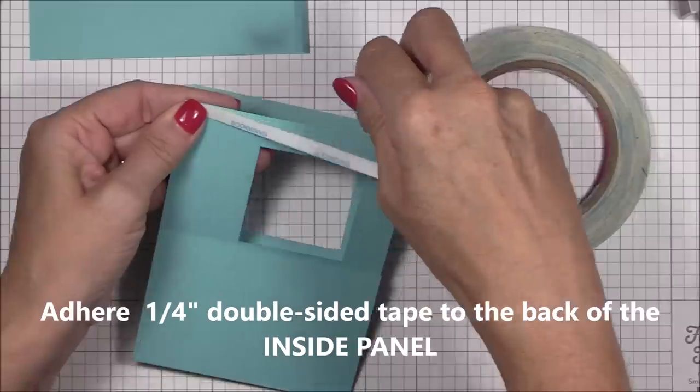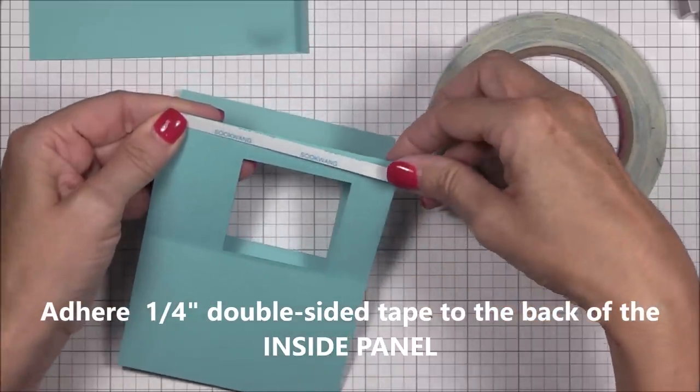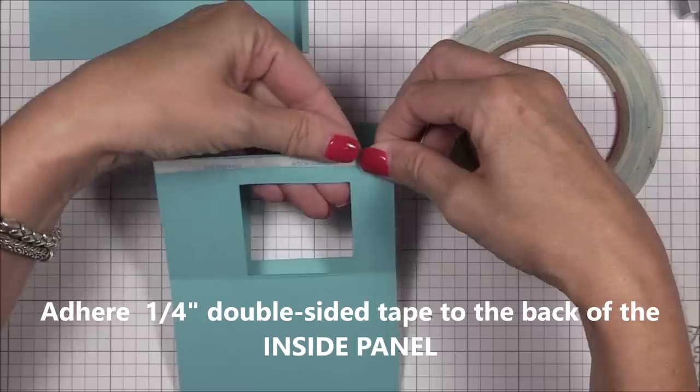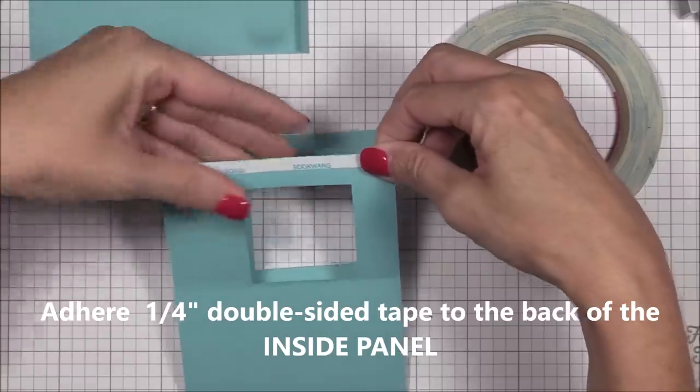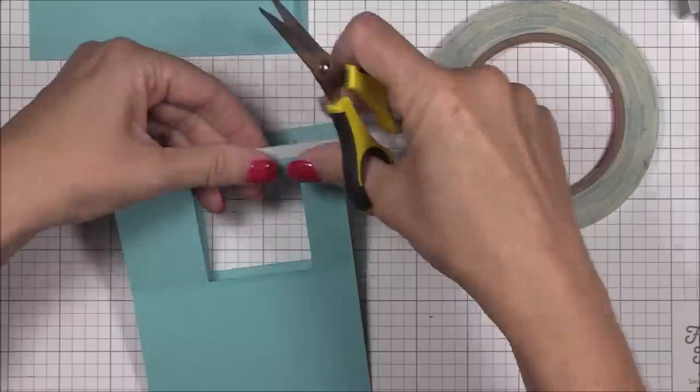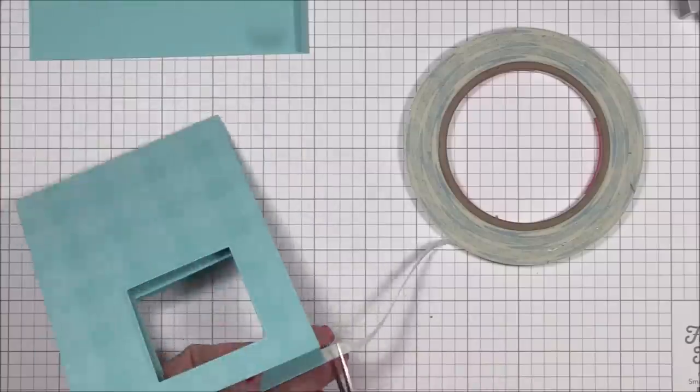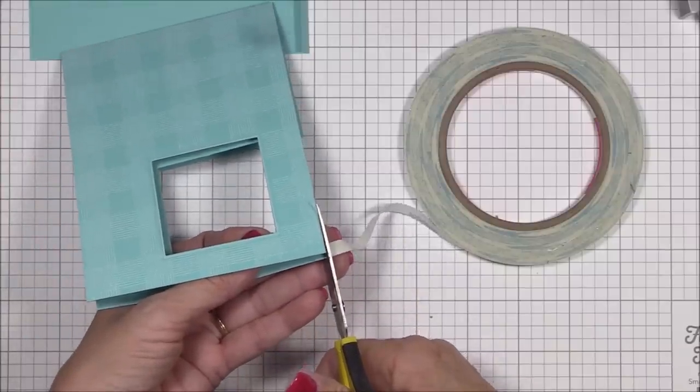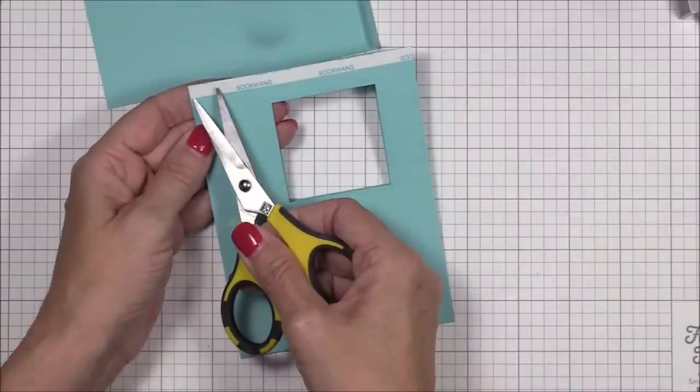Now I'm adhering some quarter inch double sided tape to the back top edge of the inside panel and it's important to get it as close to the top edge as you can. If you're nervous about being perfect, you can use one eighth inch double sided tape instead. It's a little more forgiving and will ensure that stray adhesive won't keep the card from working properly.